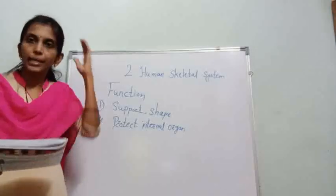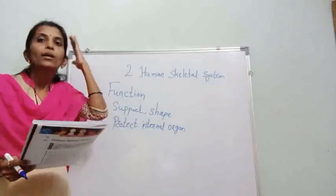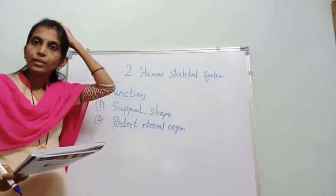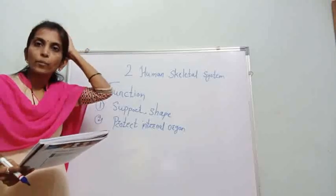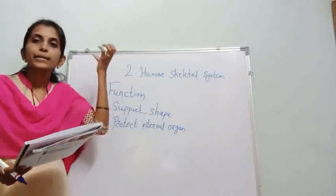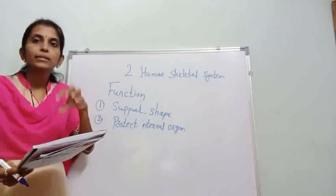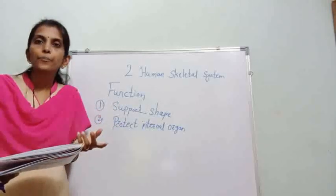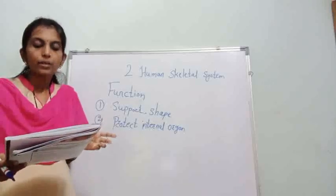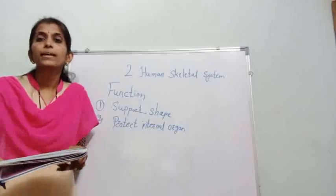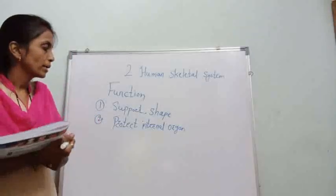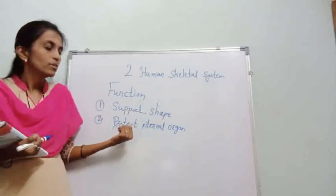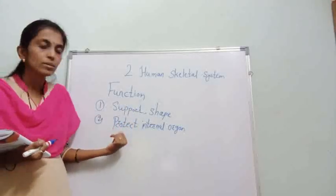Such as the brain — the brain is also an internal organ. The part of our body enclosing the brain is called the skull. Inside the skull the brain is present. So the skull, heart, brain, and lungs are internal organs and they are protected by the skeleton. This is the second function.